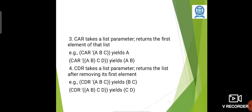Similarly, CDR of apostrophe ((A B) C D) where A B is a sublist, the first sublist will be removed. So we will get (C D).